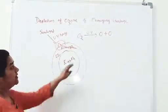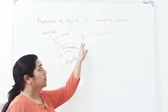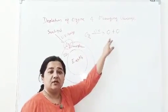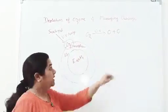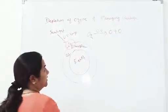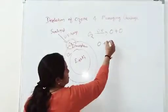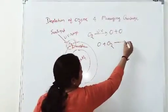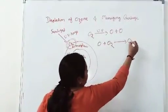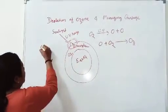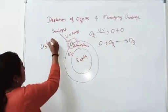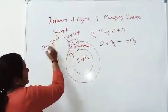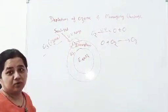Ultraviolet rays cause the O2 molecule to be converted into oxygen atoms. Again, that oxygen atom combines with an oxygen molecule to form O3 — and that O3 is called Ozone. This is O3. We call it Ozone.